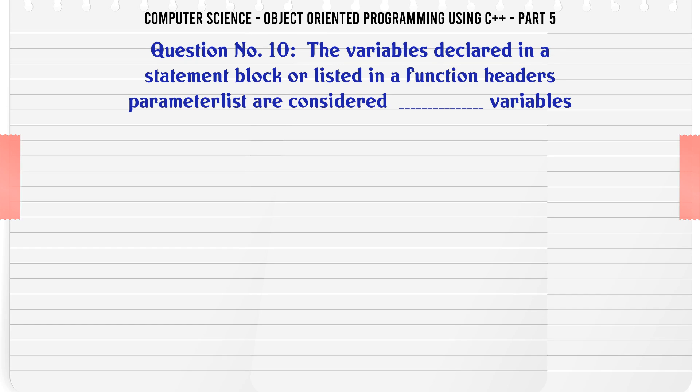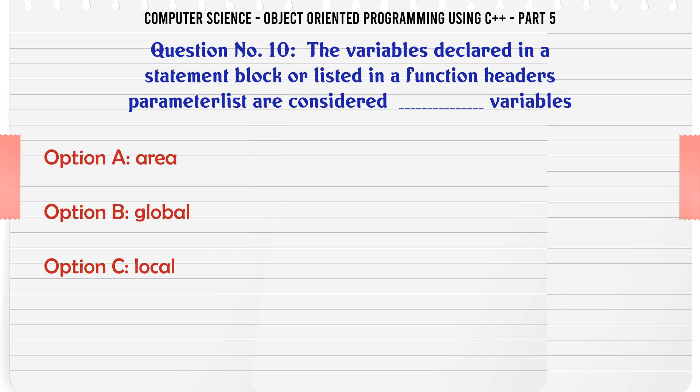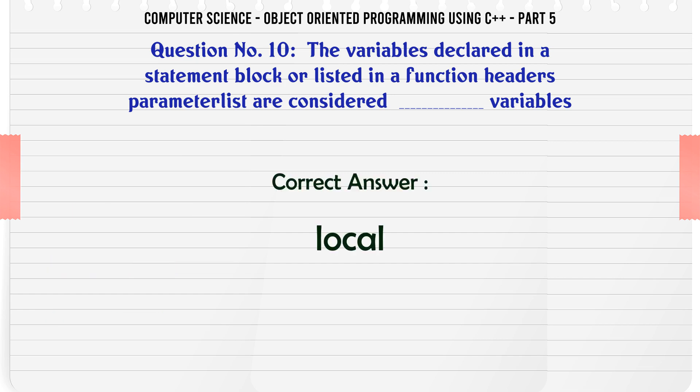The variables declared in a statement block or listed in a function header's parameter list are considered what kind of variables? A. Area. B. Global. C. Local. D. Reference. The correct answer is: Local.